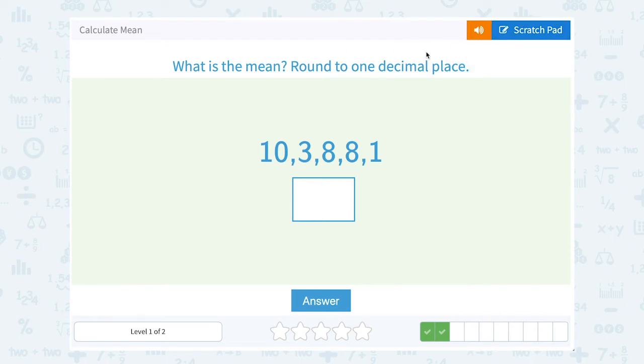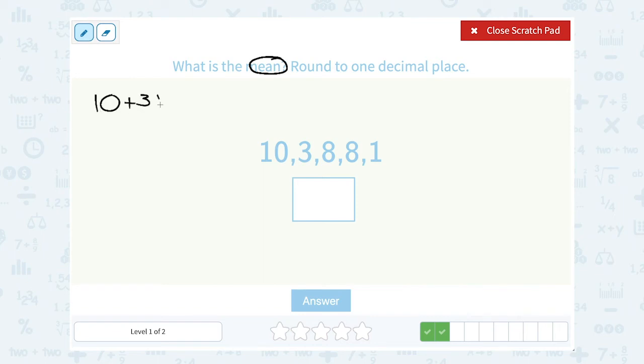What is the mean? Round to one decimal place. So we're going to start by adding up those numbers: 10 plus 3 plus 8 plus 8 plus 1.